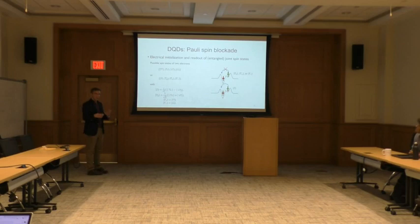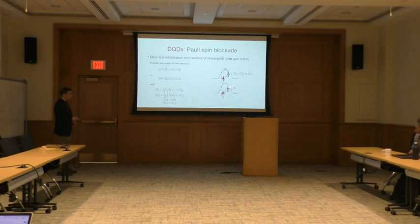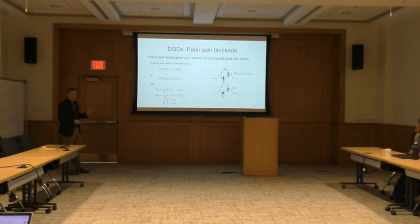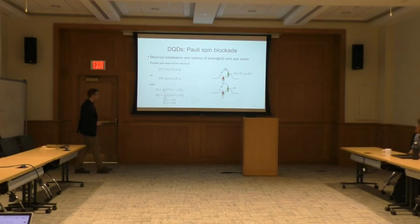So there's a subtle connection between spin and charge in a system of two electrons in a double dot. If you have two electrons in separate dots and try to push them together into the same dot, they won't go if they have the triplet state, but they will if they have the singlet state. You can use this to read out entangled states by trying to put two electrons into the same dot — it can happen for the singlet, but not for the triplet. You can reverse this process to initialize entangled states: if you wait long enough when the ground state has two electrons in the same dot, this generates an entangled singlet state. This is called Pauli spin blockade.